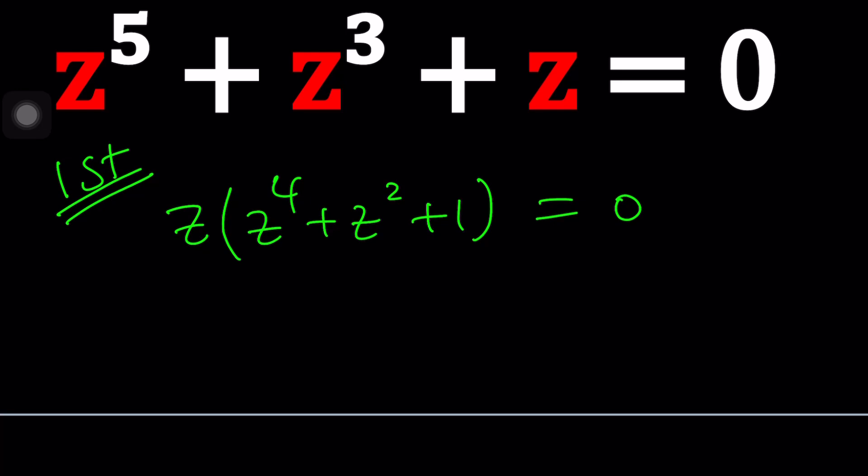you can turn this into a quadratic equation easily because there is no Z term or Z cubed. Make sense? Great. Let's go and see how we can do it.